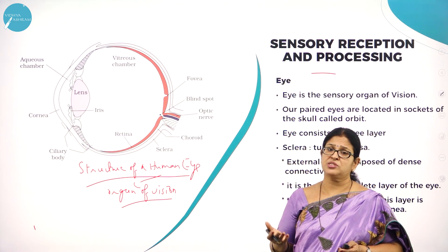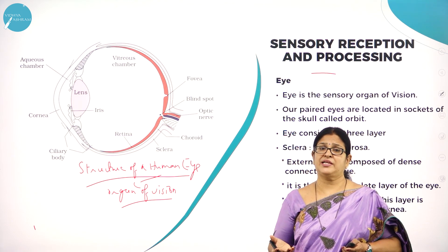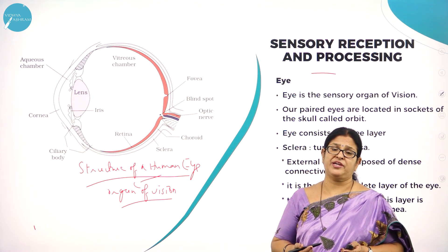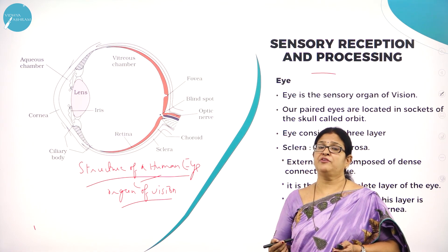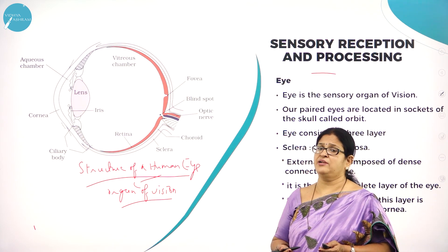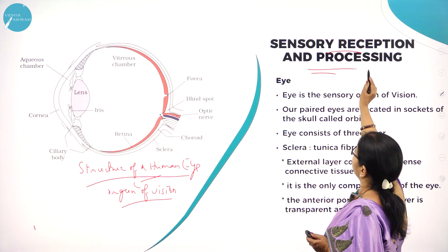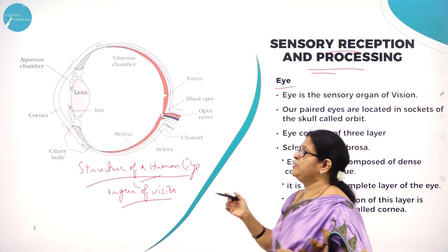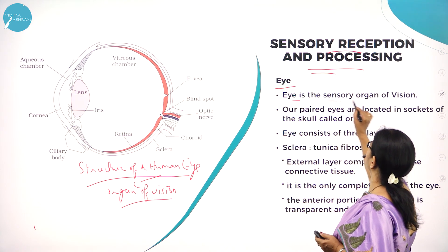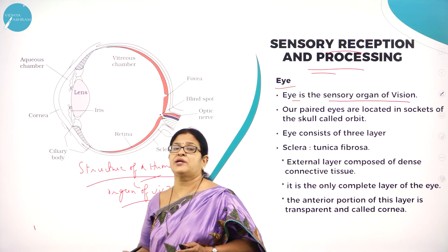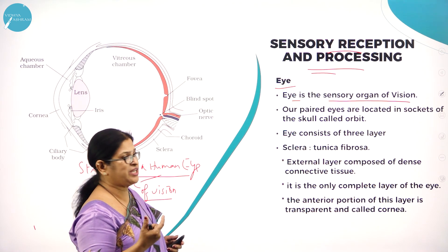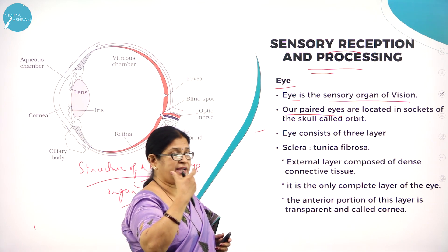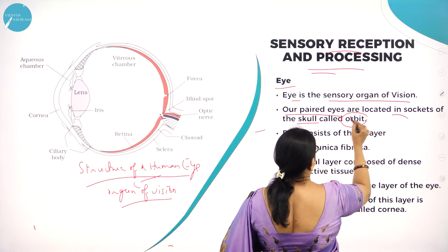We are seeing everything around us with this eye. All of us know the different parts of the eye. This chapter on neural control and coordination is very important because the concepts we learn are important for other physiological processes. Eye is the sensory organ of vision, and we have paired eyes — one right and one left — located in sockets of the skull called the orbit.